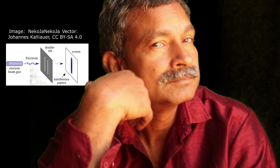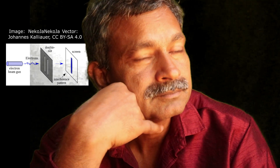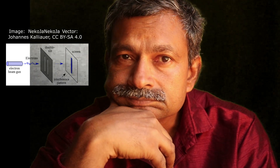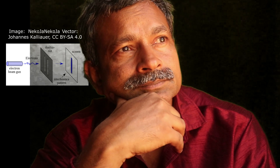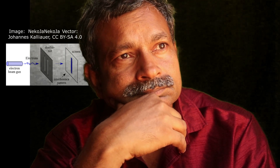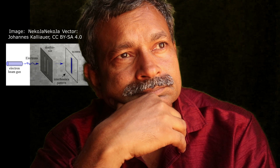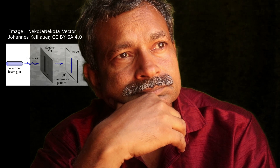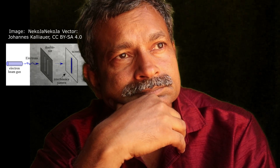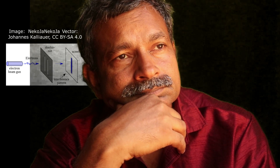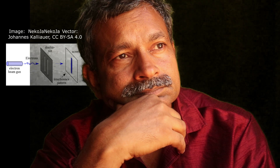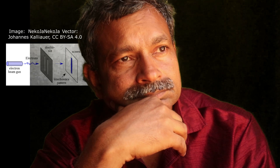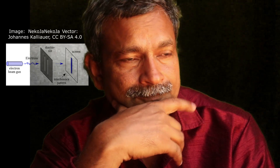With observation: if you place a detector at one of the slits to determine which path the electron takes, the interference pattern disappears. Instead, you observe individual hits on the screen corresponding to the detected electrons. This implies that the act of observation has forced the electron to behave like a particle, taking a definite path through one slit.